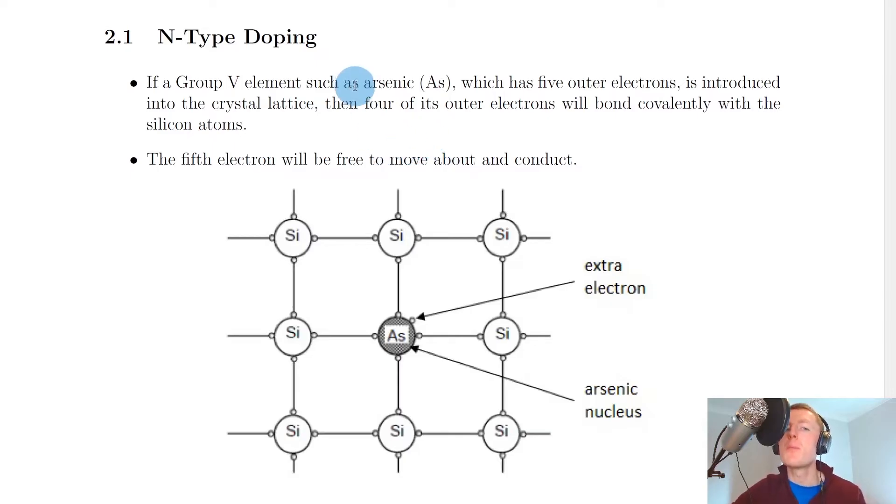Now before we look at a specific type of doping, which is n-type doping, a quick reminder about the purpose of doping in the first place. Remember the whole point of doping a semiconductor material is in order to increase its conductivity, or in other words, reduce its resistance.